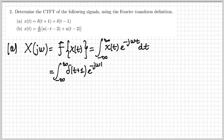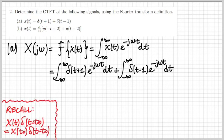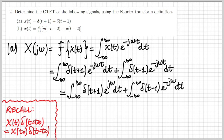In our case, I replace x of t with the expression in bullet A, which is given by the sum of two deltas. Because of the linearity property, I can decompose the integral into two integrals. Now let's recall the important property of the impulse: x of t times δ(t − t₀) equals x(t₀) times δ(t − t₀). We evaluate the exponential in the first integral for t equal minus one, since that's where the first delta is centered, and the exponential in the second integral for t equal plus one.